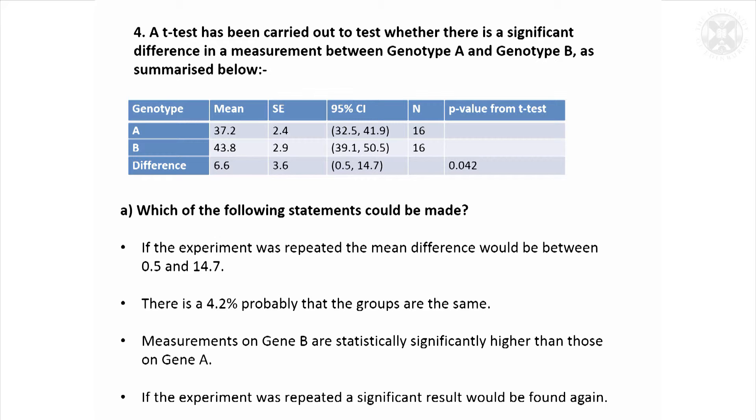The next statement: there's a 4.2% probability that the groups are the same. Is that true? Yes, it's true. We've got a p-value of 0.042, and that's exactly what it means—there's a 0.042 or 4.2% chance that the groups are the same. Measurements on gene B are statistically significantly higher than those on gene A. Can we say that? Yes, that's right. We've got a significant p-value there, so we can actually conclude that.